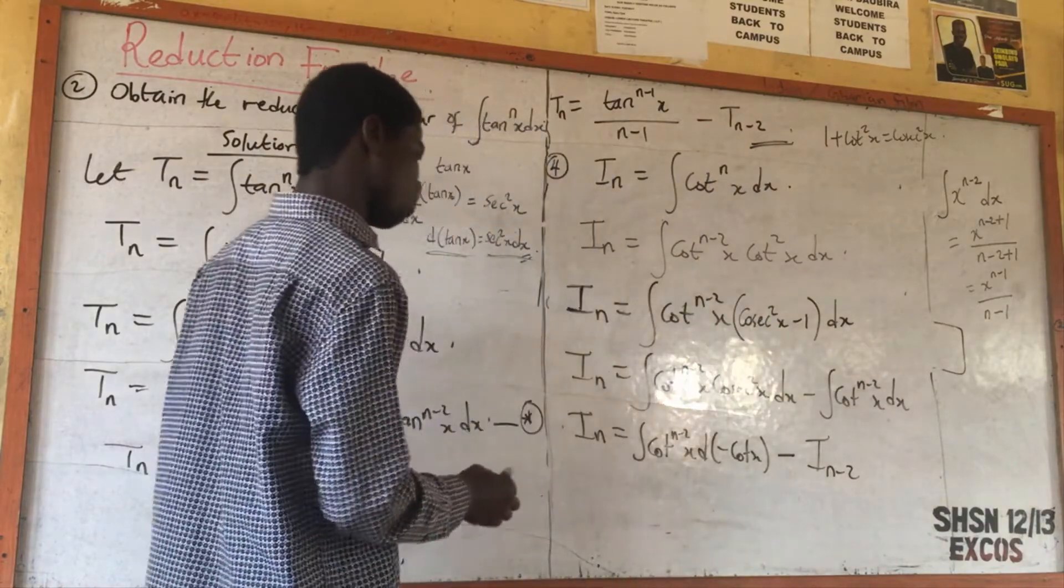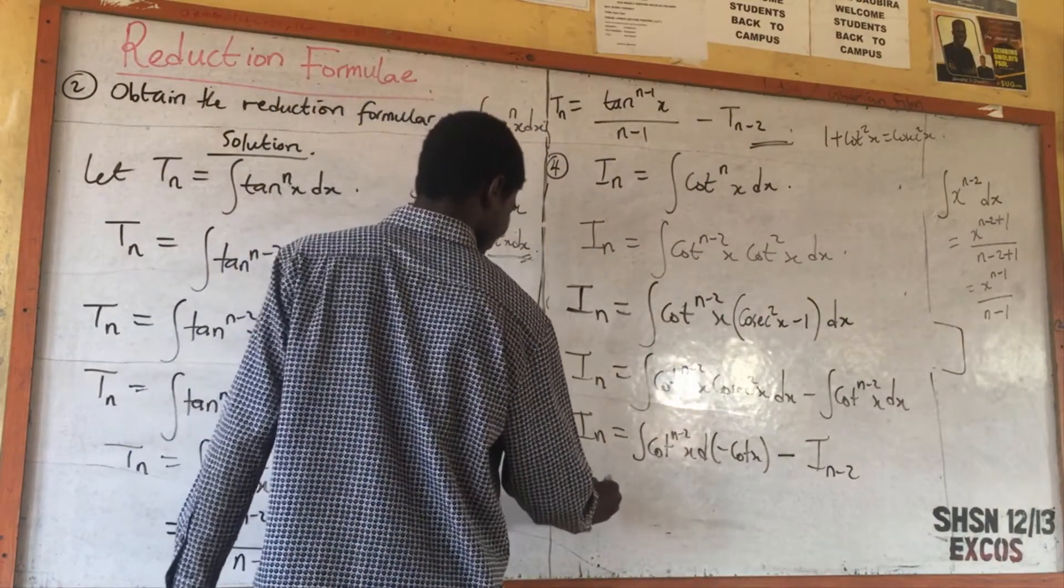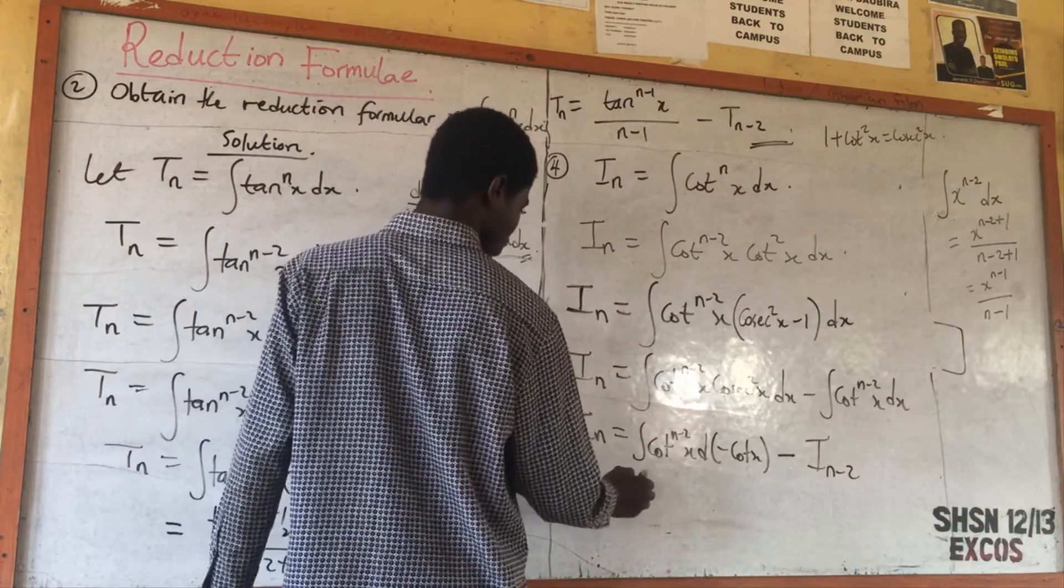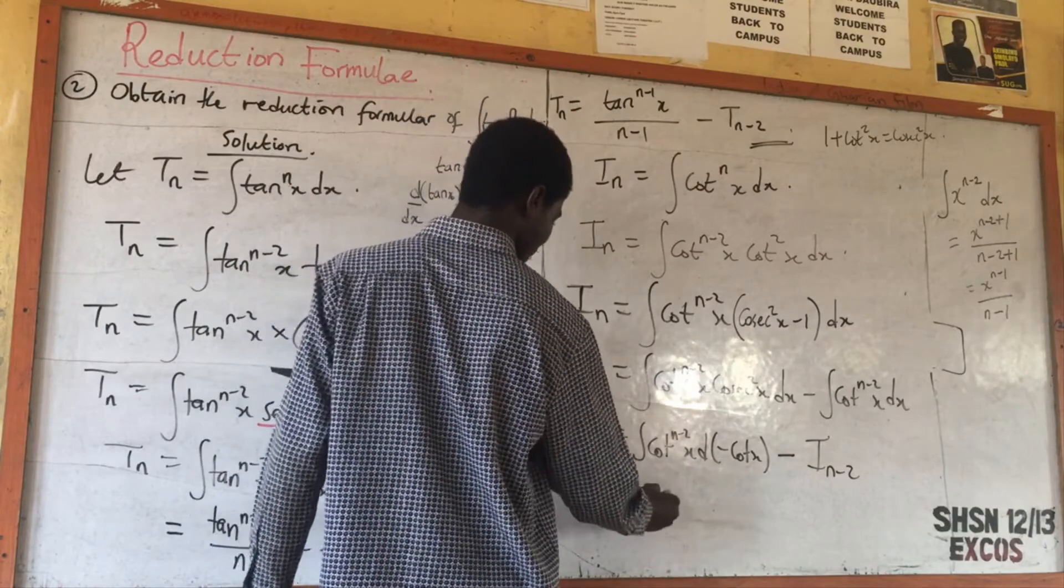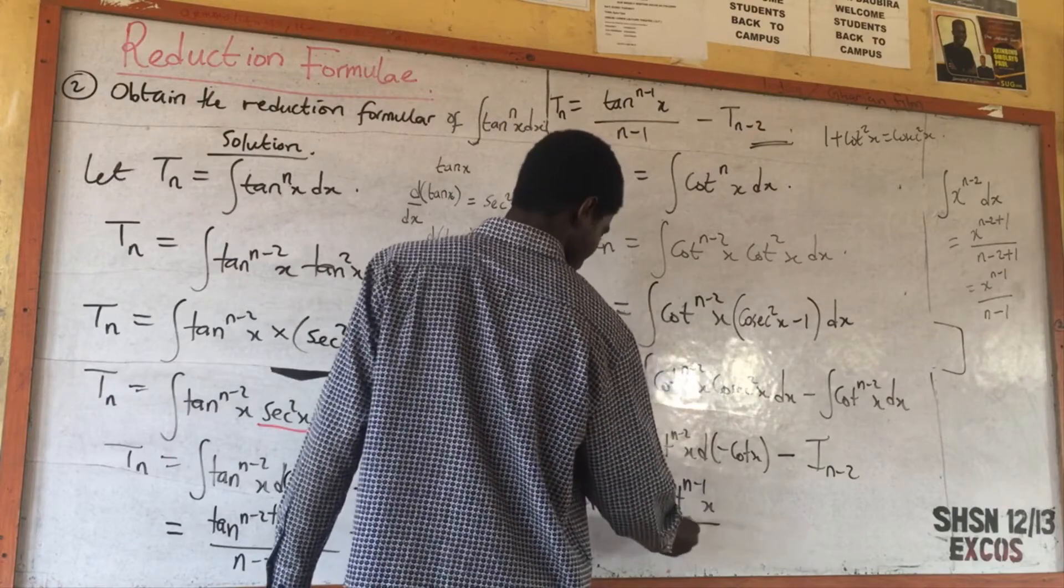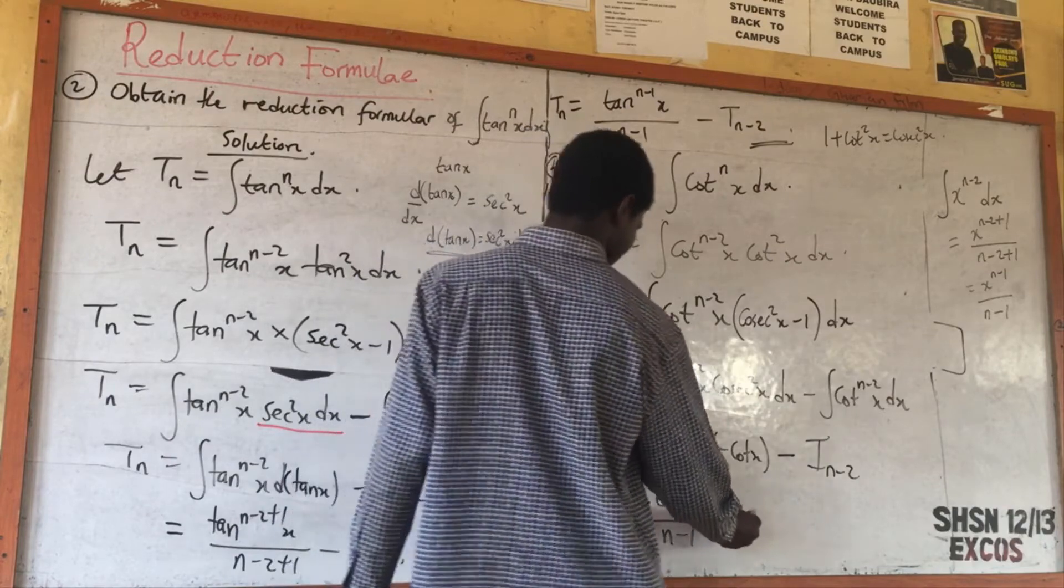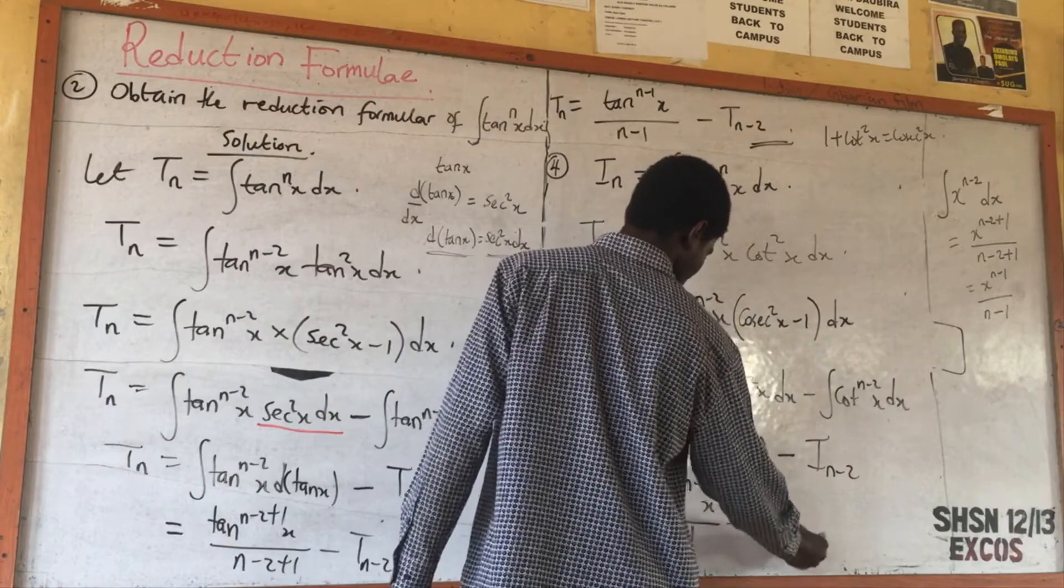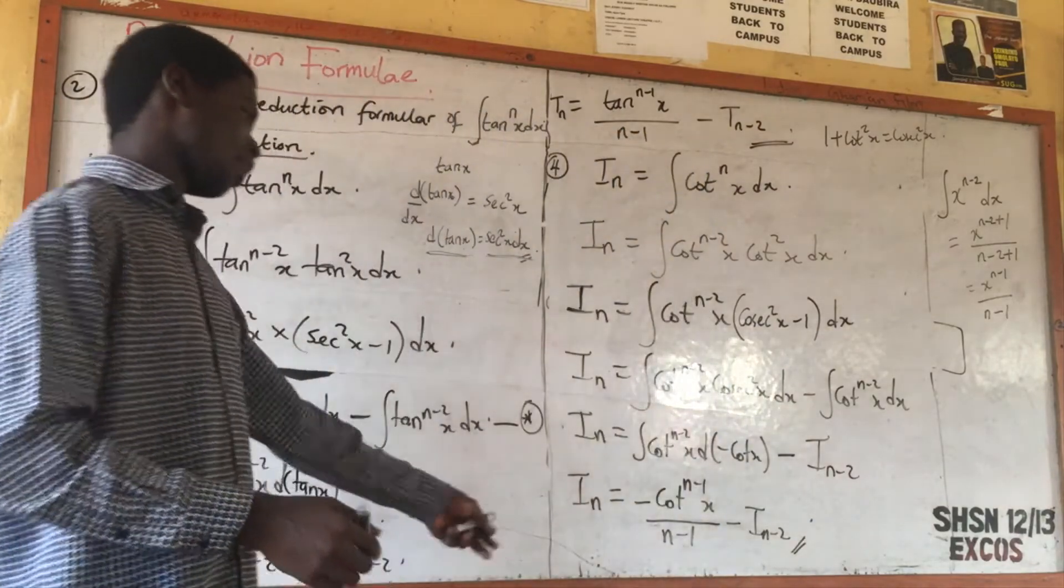So that this one will now be I_n equals minus cot^(n-1)s over (n-1) minus I_(n-2). That is what we are going to have.